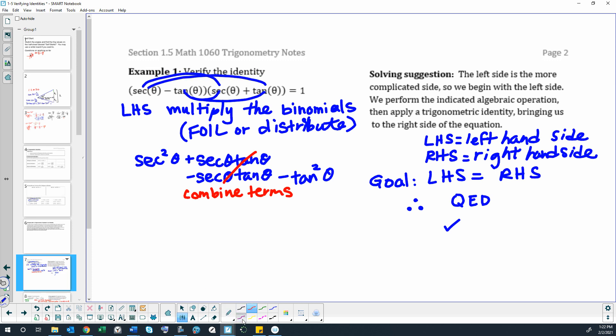So then these two will go away when we combine terms. So then we will have secant squared minus tangent squared.